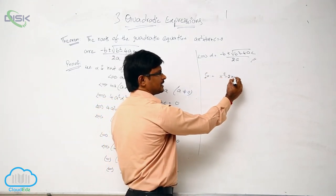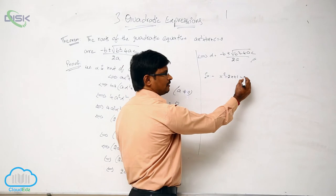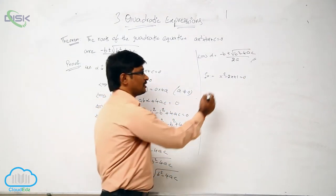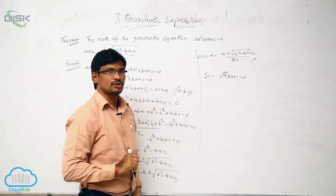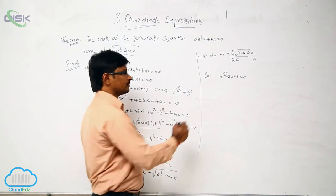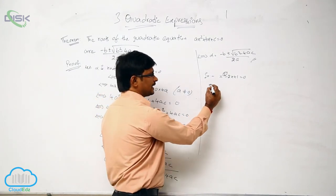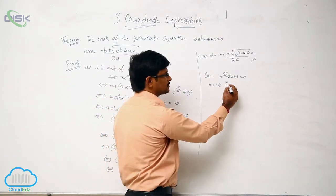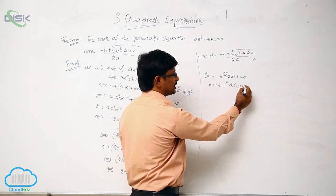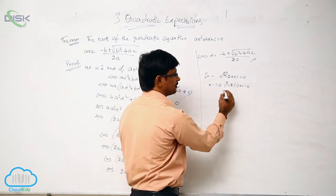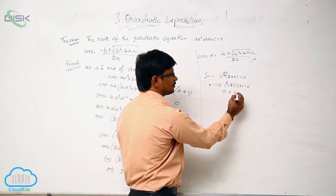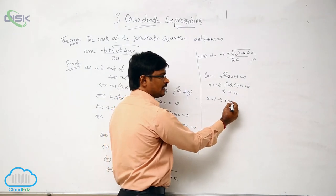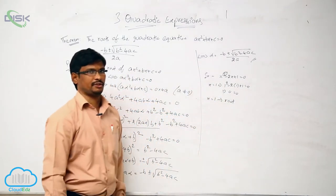For example, take x² − 2x + 1 = 0. This is a quadratic equation, so how many roots will we get? 2 roots. If we substitute x = 1: 1² − 2·1 + 1 = 0, which gives 0 = 0. So we can say that x = 1 is a root of this quadratic equation.